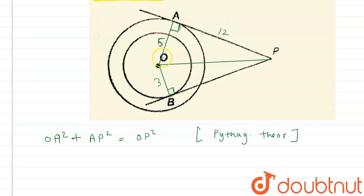So here we see that OA is 5 and AP is 12, so we get 25 plus 144 equals OP square.